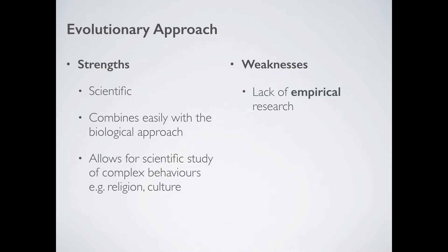There are weaknesses too. The first big one is a lack of empirical research. There's a lot of research and hunter-gatherer societies tell us something, but really we're projecting that millions of years into the past — does that actually tell us anything about primitive man? Probably not. Secondly, this suffers hugely from determinism — there is no free will here. The evolutionary approach says if you have a gene for aggression or have evolved to be stressed, that's always going to be the behaviour you show. Psychology frowns upon determinism.